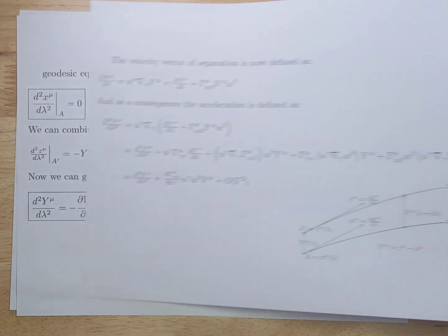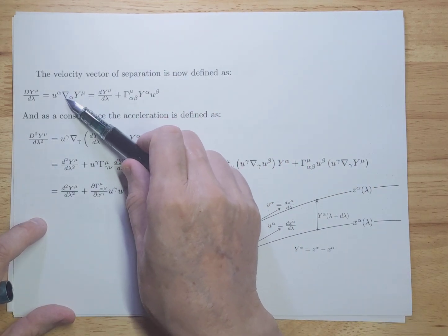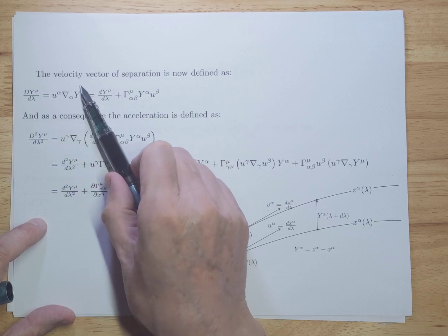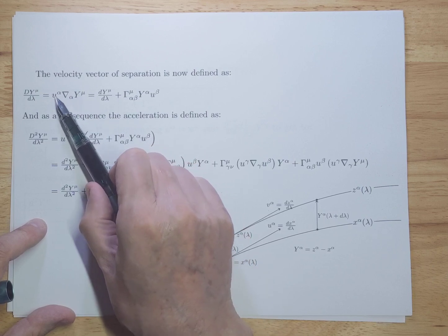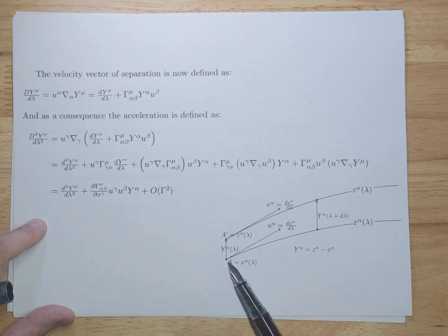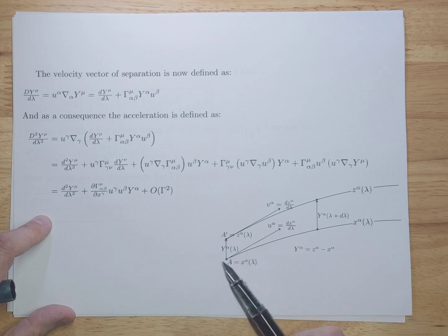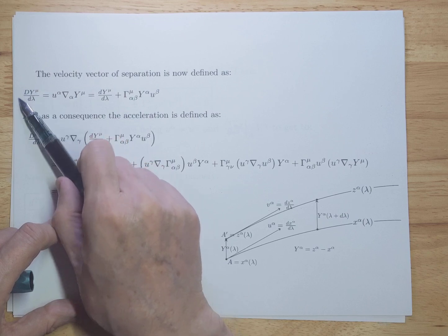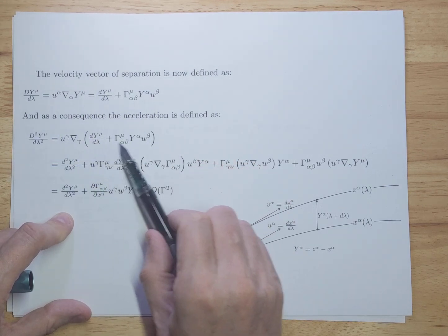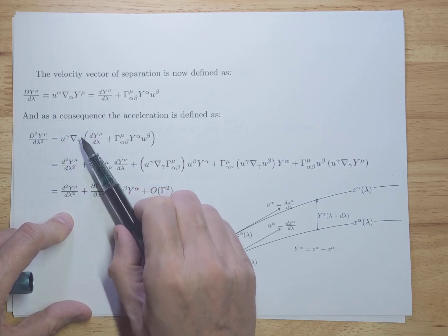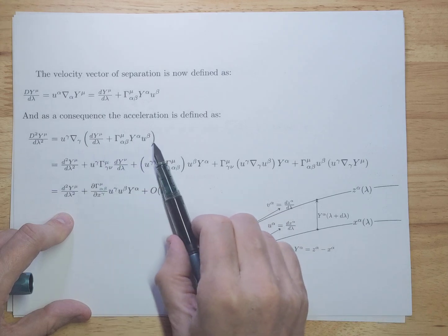Now let's look at the velocity factor of separation and how it is defined in curved spacetime. You define these with covariant derivatives. You look at the y-mu factor and how it varies in the direction of u — how y varies as you move along the geodesic with respect to the velocity vector u. To get acceleration you differentiate twice, so you take this velocity factor and differentiate one more time in a covariant way. You must use covariant differentiation because even in a local Lorentz frame you still have curved spacetime globally.